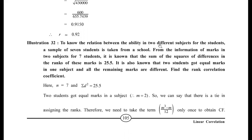n = 7 and Σd² = 25.5. It is also known that two students got equal marks in one subject — there is a tie. Whenever there is a tie, a correction factor (CF) must be calculated. For two tied observations, m = 2, and CF = (m³ − m)/12 = (8 − 2)/12 = 0.5.